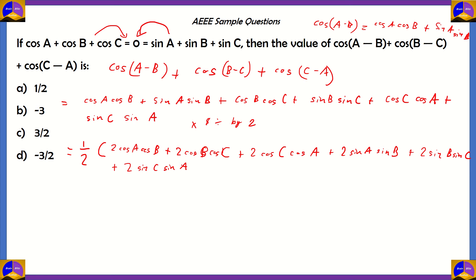As you can see, we've got 1/2 factored out here. So our final answer will have a denominator of 2. That means option B, which is -3, turns out to be incorrect.